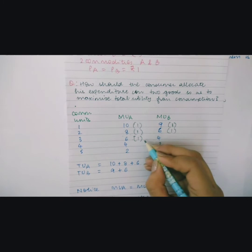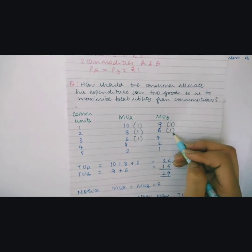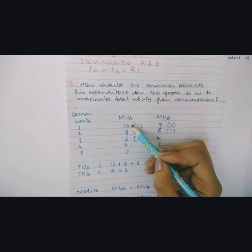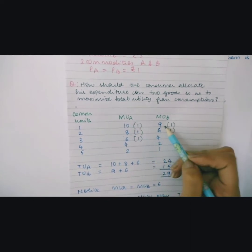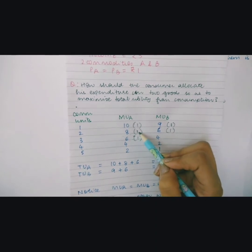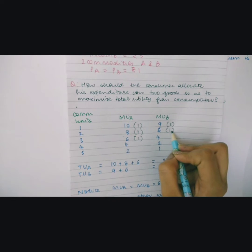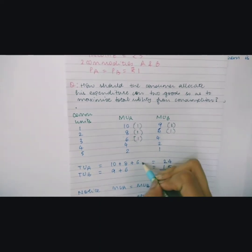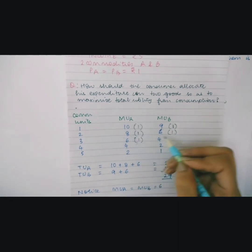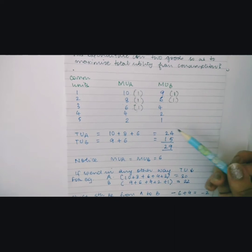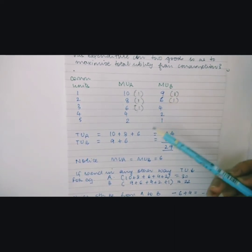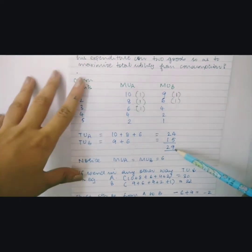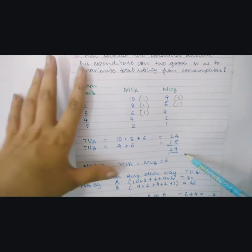You have now spent all 5 rupees: 1 rupee on the 1st unit of commodity A, 1 rupee on the 1st unit of commodity B, 1 rupee on the 2nd unit of commodity A, 1 rupee on the 2nd unit of commodity B, and 1 rupee on the 3rd unit of commodity A. The total utility from A is 10 + 8 + 6, and from B is 9 + 6, giving a total utility of 39.